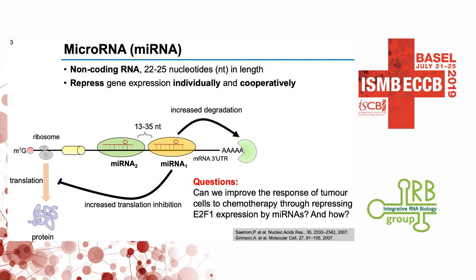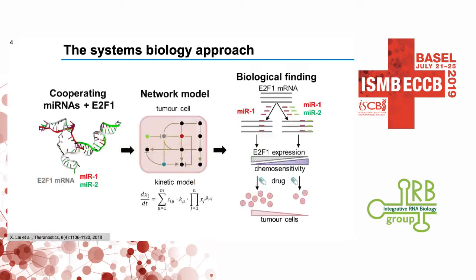The question we want to ask is: can we improve the response of tumor cells to chemotherapy through repressing E2F1 using microRNAs? To answer this, I adopted a systems biology approach in which we first identify the cooperating microRNAs targeting E2F1, analyze the structure of those triplets to find the most reliable microRNA pairs, and then integrate this microRNA regulation into a network model underlying chemotherapy resistance of tumor cells regulated by E2F1.